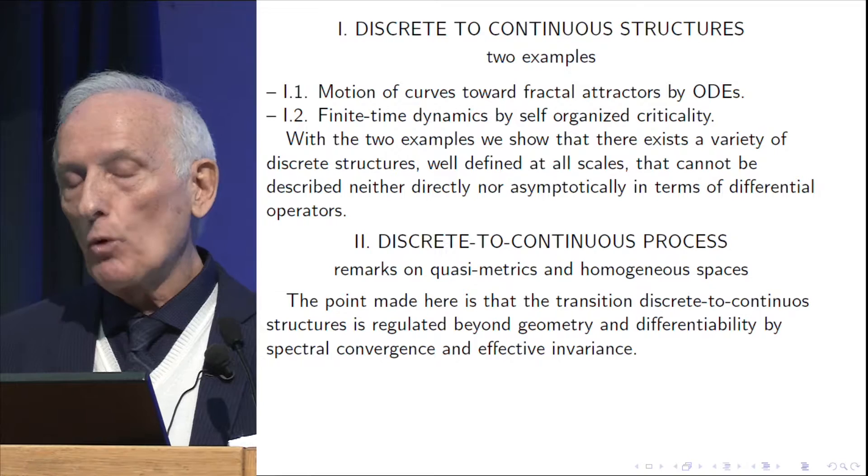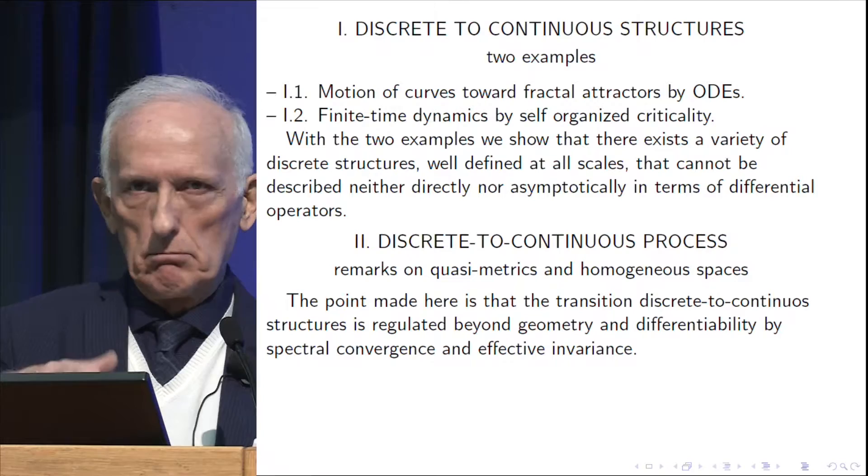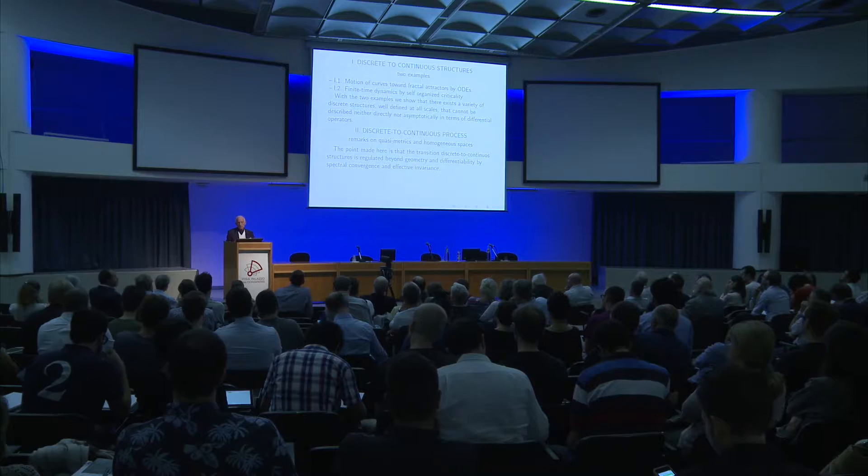Heisenberg exactly said, okay, there is no geometry in quantum mechanics, but there are eigenvalues, because this is what we observe, the lines of the spectrum. And he said, okay, let I study this.